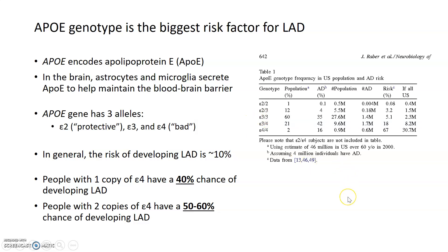One thing that we hope to be able to do in the future is to diagnose people's potential risk for developing late-onset Alzheimer's by looking specifically at their APOE genotype. If the APOE genotype is E4-E4, it will tell us that they have a higher chance of developing Alzheimer's, and we might be able to put into effect some preventative measures beforehand.